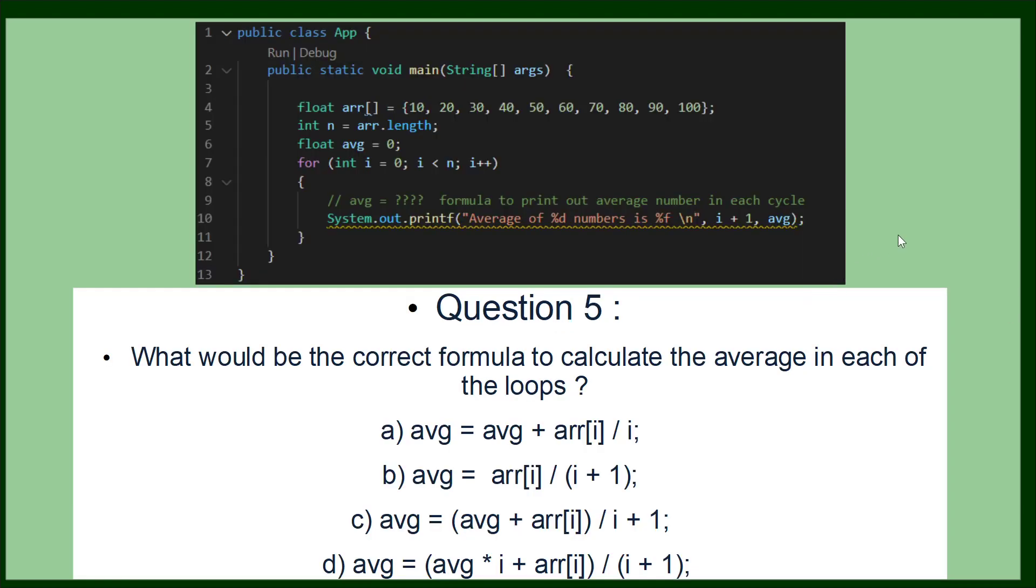The fifth question is also talking about the mathematics and the order of the operators. In this question, it wants you to try and find the average within each loop. It's a much more complicated example than the previous one. And of course, the right answer is D.